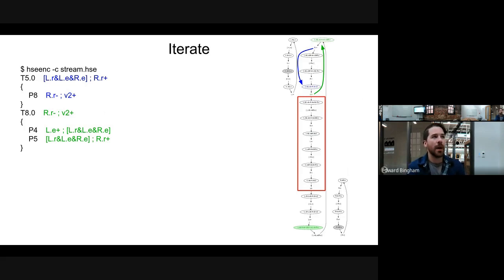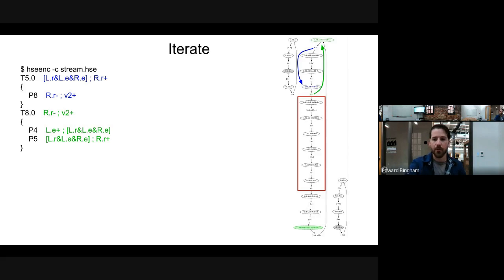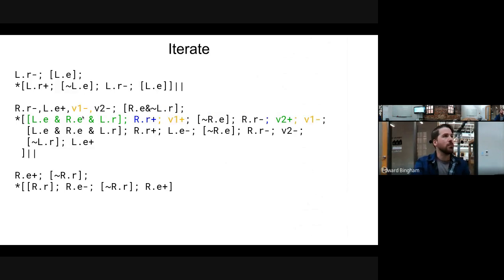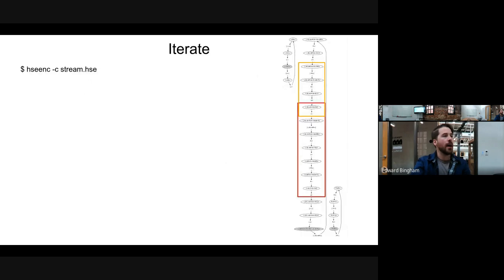We solve this by first trying to minimize the number of new conflicts we create with state variable insertion, and then by iterating on state variable insertion while there are still conflicts to be resolved. We've got this new pair of conflicts, so we insert a new state variable transition that cuts those two arcs. After doing so, when we run HSC encoder -c, it doesn't identify any conflicts.